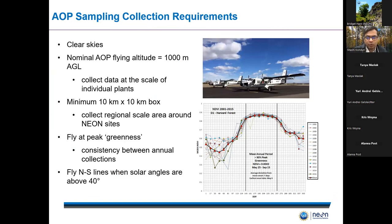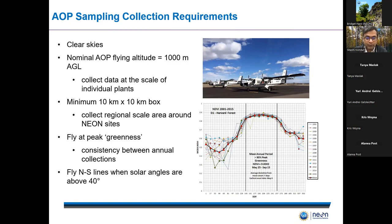NEON has a standard protocol to determine ideal conditions for flying over a site. The biggest impediment is ensuring a cloud-free sky. We have been successful in conducting most aerial surveys in near cloud-free conditions, but that may not always be possible — and you'll see an example of that in the tutorial today. We fly the airplane at a constant altitude of 1,000 meters above ground level.